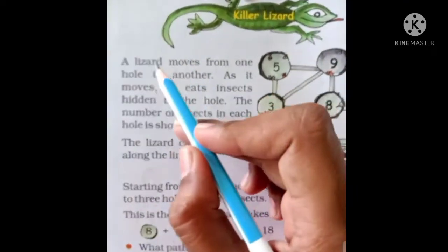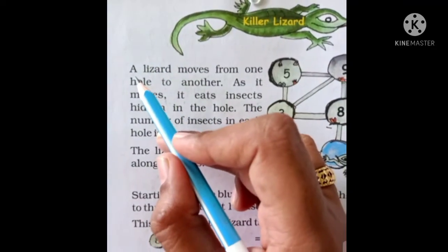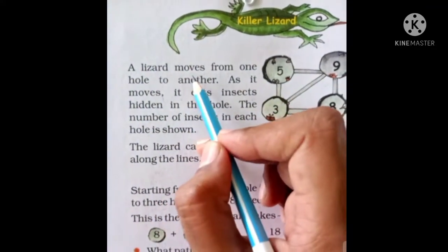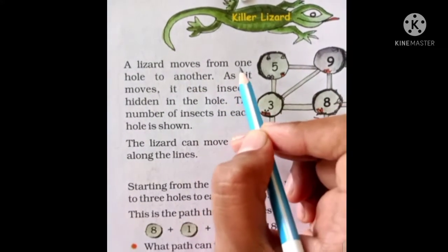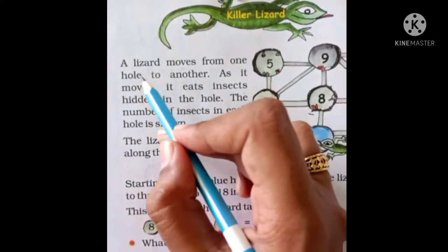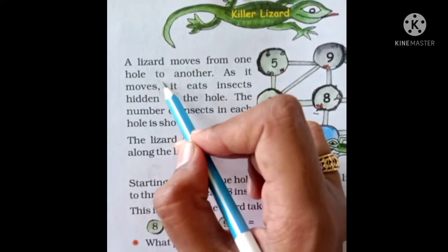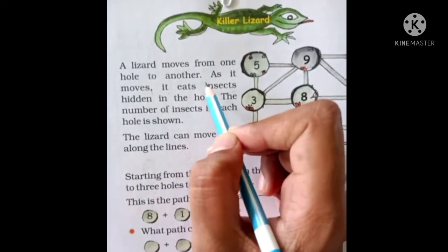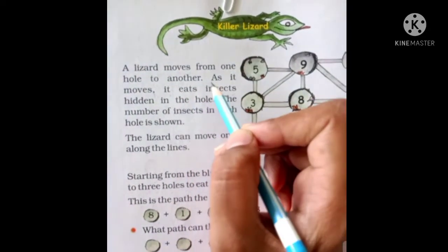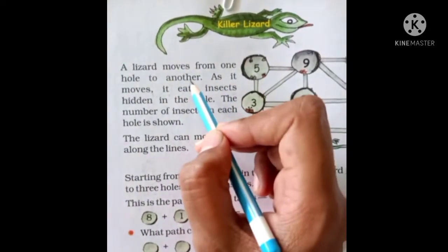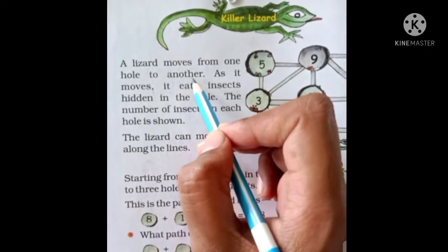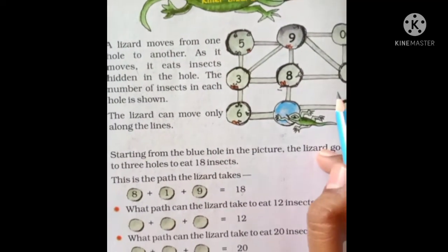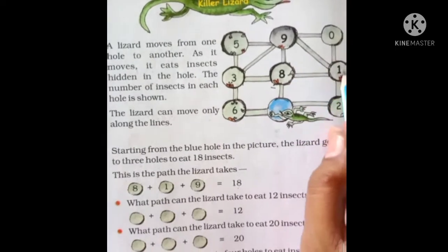Now let's read this sentence. Lizard M-O-V-E-S, moves from one H-O-L-E, hole, to another. Lizard kya karti hai? Ek hole se dusre hole pe move karti hai. Move kana yane jana. Can you see that? This is the hole.